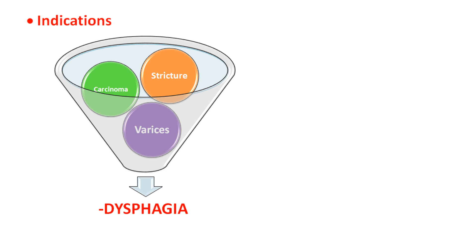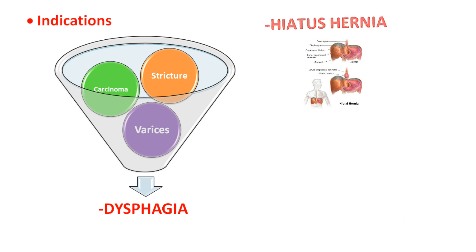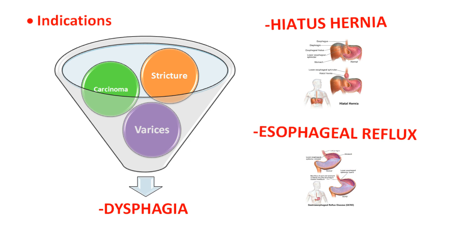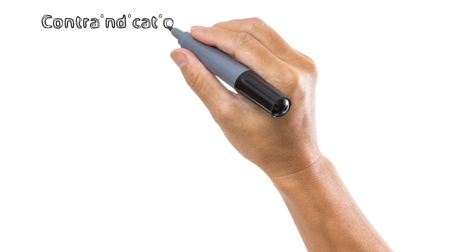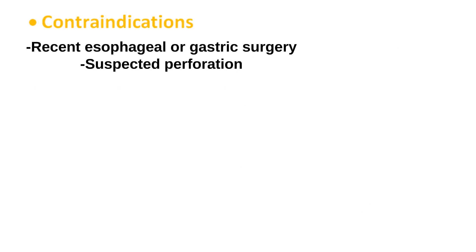Other indications for a barium swallow include hiatus hernia, which is a condition in which part of the stomach protrudes through the diaphragm; esophageal reflux, in which contents of the stomach regurgitate into the esophagus; or cases of suspected foreign bodies in the esophagus. However, a barium swallow investigation is avoided in patients who recently had esophageal or gastric surgery. Also, because the contrast media used is water-insoluble, it is avoided in patients with suspected perforation.